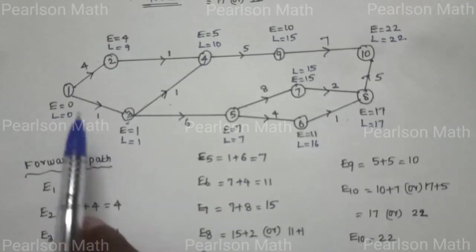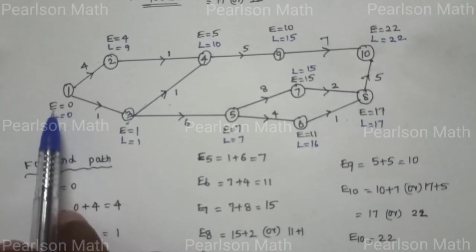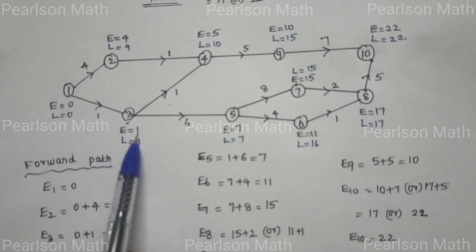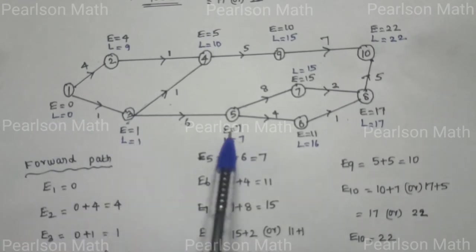Next, we determine the critical path by comparing E values and L values — where they are the same, those activities lie on the critical path.